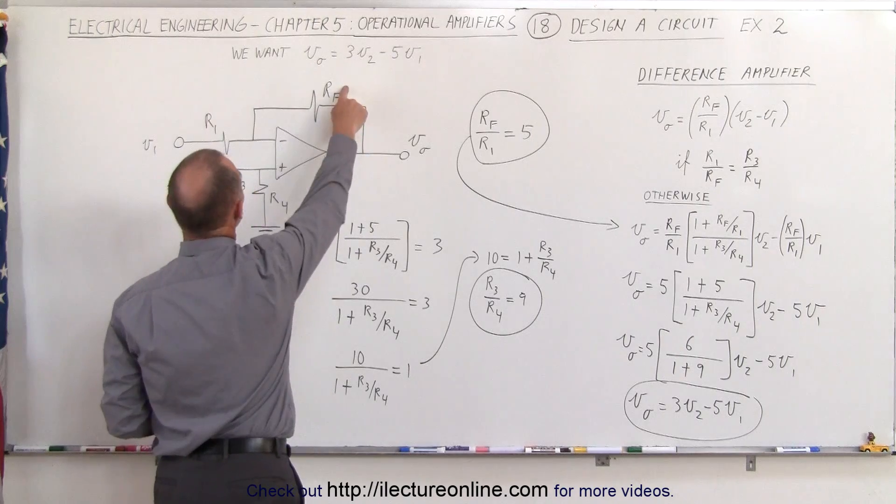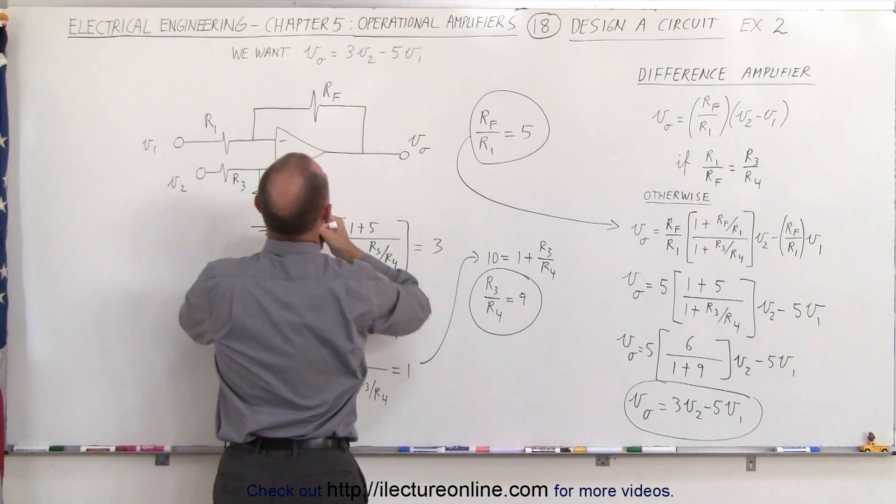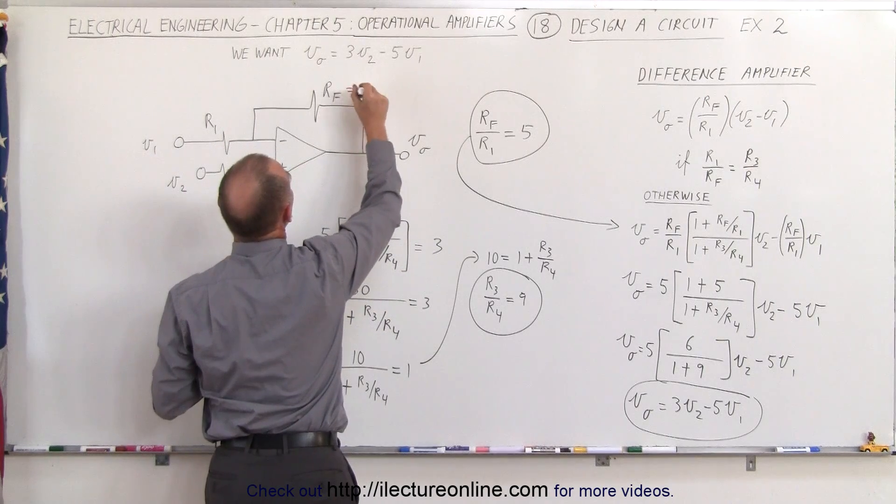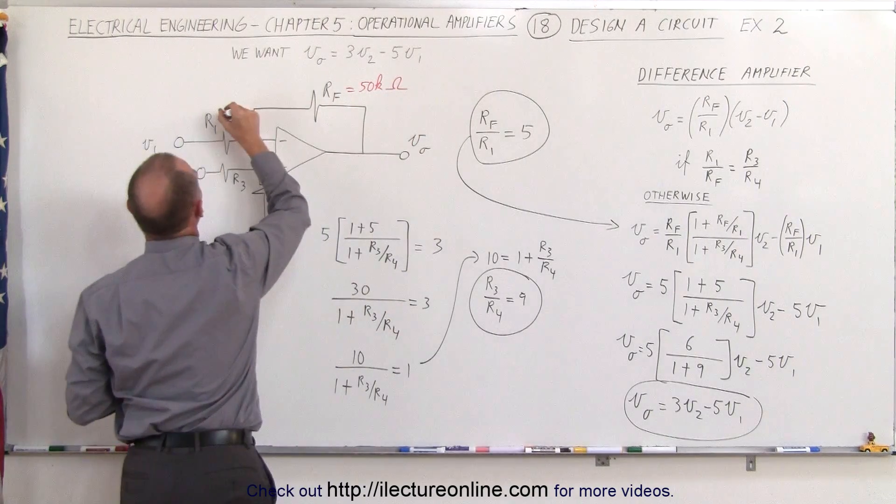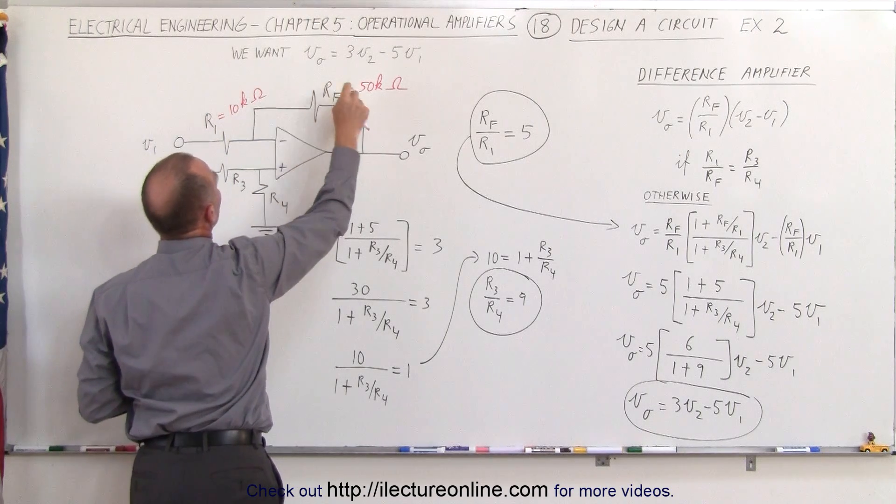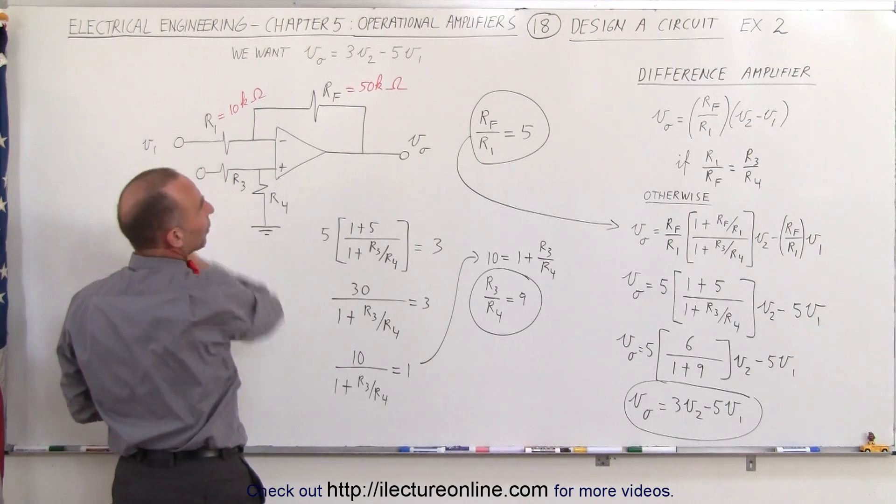First of all we want RF to R1 that ratio to be 5 to 1 right here. Let's make this one a 50 kiloohm resistor and then we'll make R1 a 10 kiloohm resistor. This will give us the 5 to 1 ratio to give us a minus 5 V1.